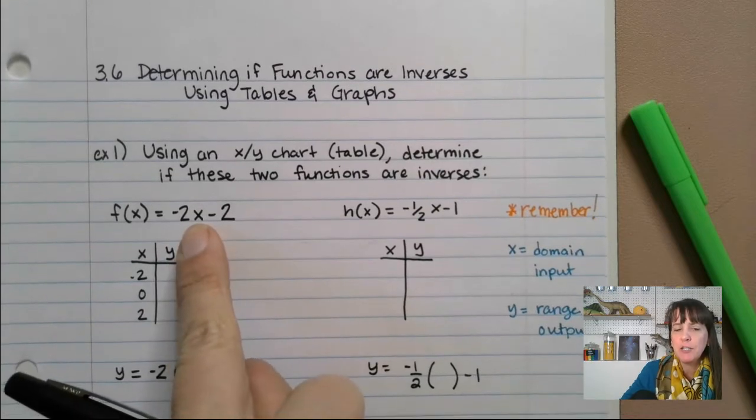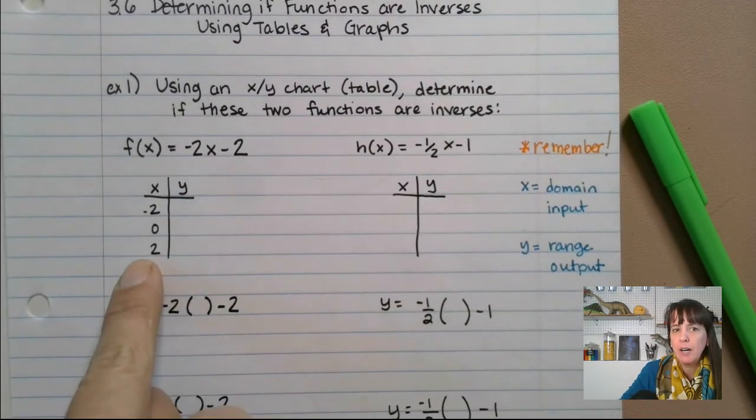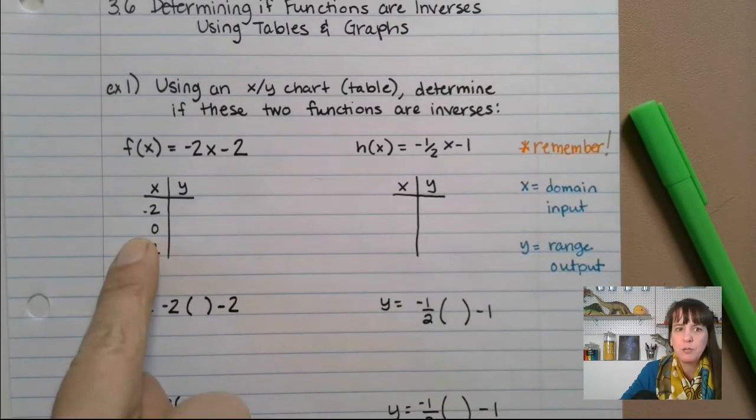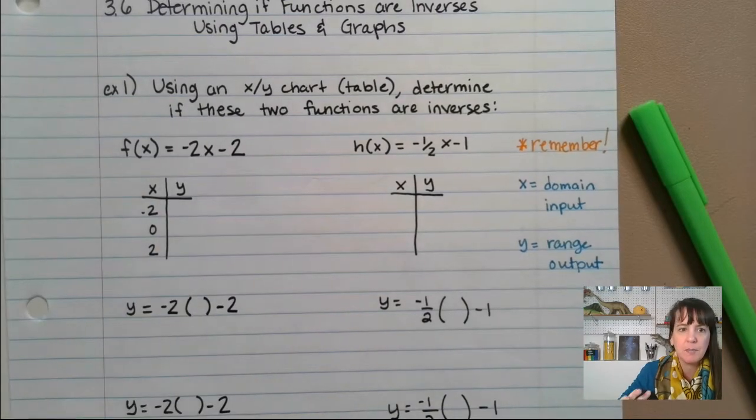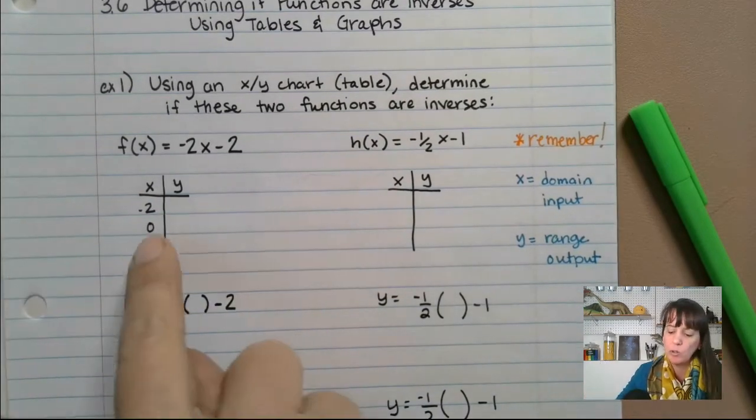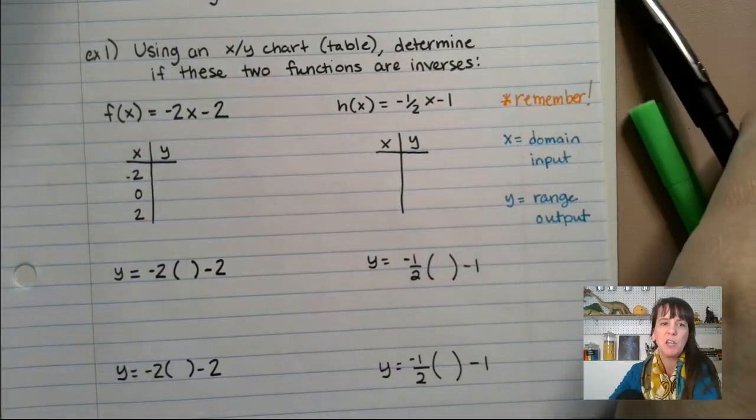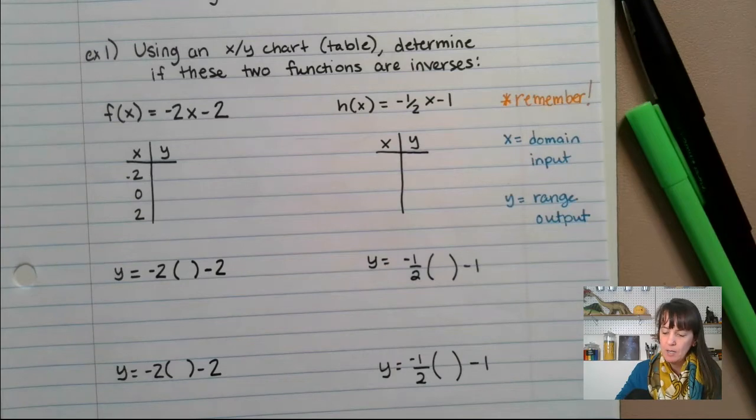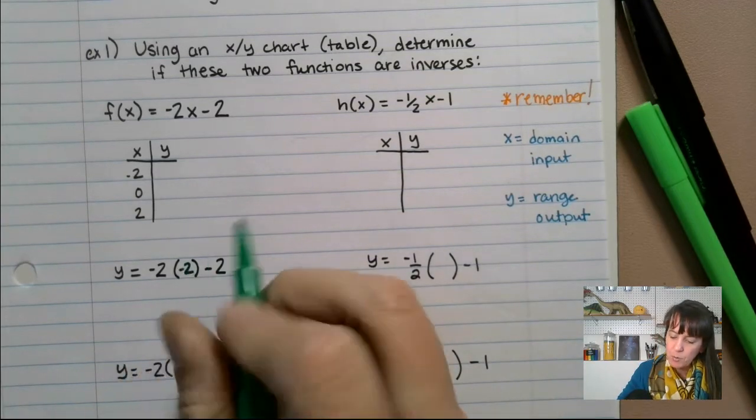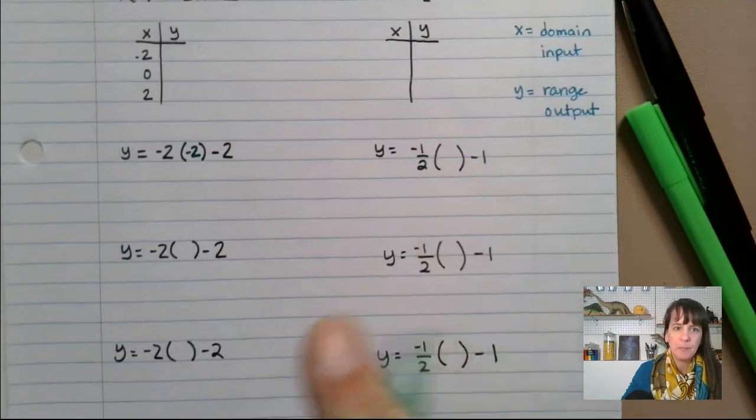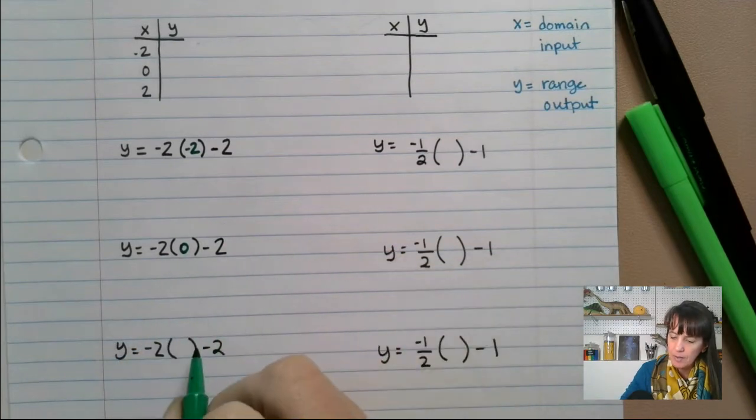For this first one, what we want to do is pick a domain. I just chose negative two, zero, and two. It can be dependent upon whatever you're told, or if you're not told anything, these are really good numbers to use. So what we're going to do is plug that in and find our y. So negative two, we're plugging into this formula here, zero and two.